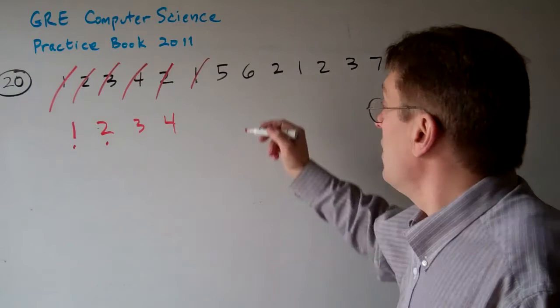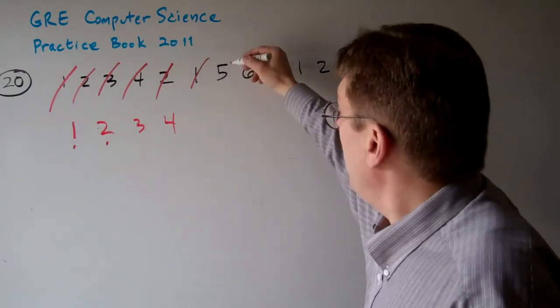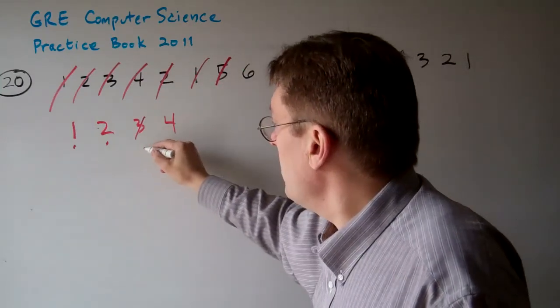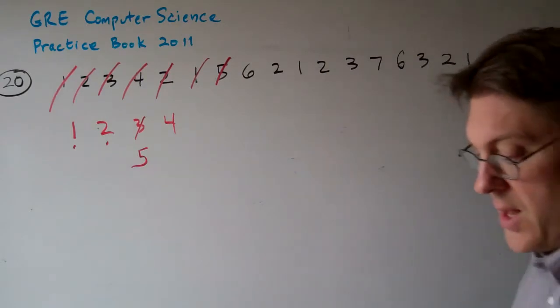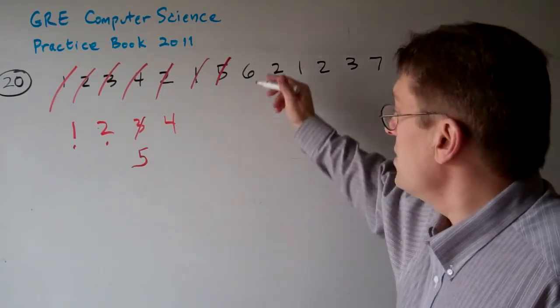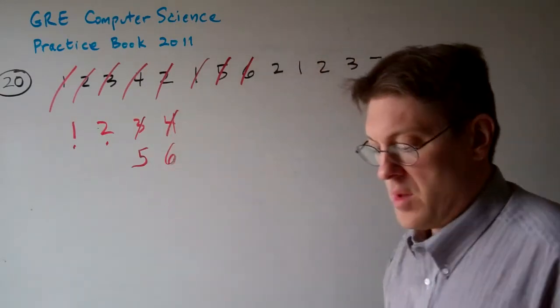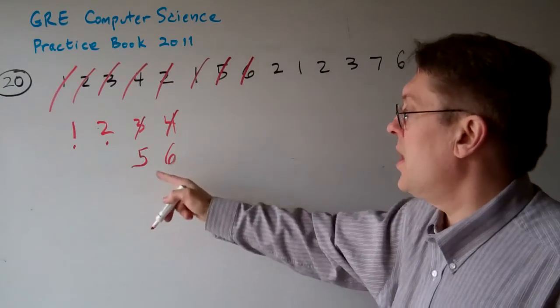So now when five comes into play, what happens? Five is going to replace the oldest one, so now this three becomes a five. Now when six comes into play, six is going to replace four. So you can see how four was the oldest one after three got updated.